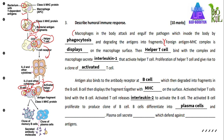After that, the activated B cell will proliferate and differentiate to produce a clone of B cells. B cells differentiate into plasma cells and memory B cells. Plasma cells secrete antibodies which defend against the foreign antigen. So humoral immune response involves the production of antibodies, which then bind to the antigen.